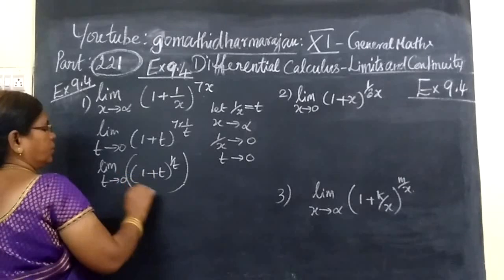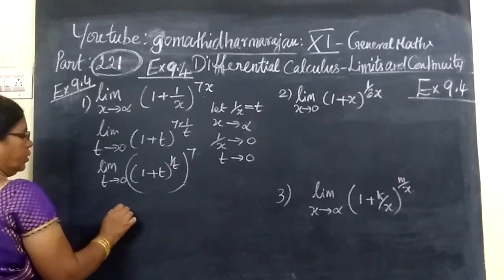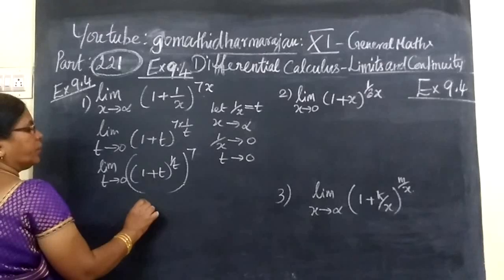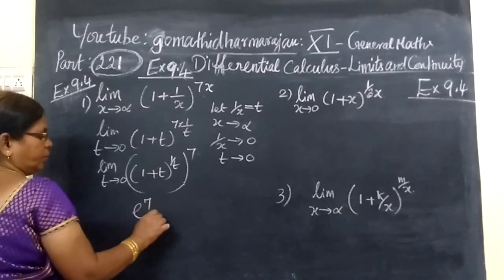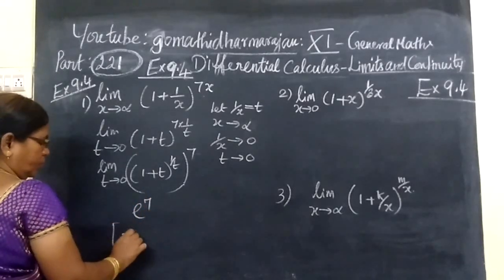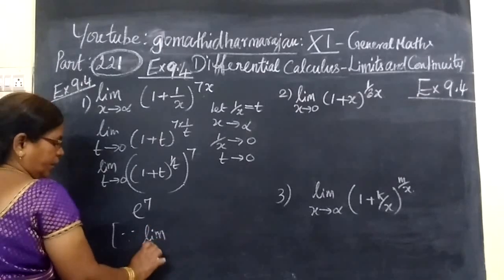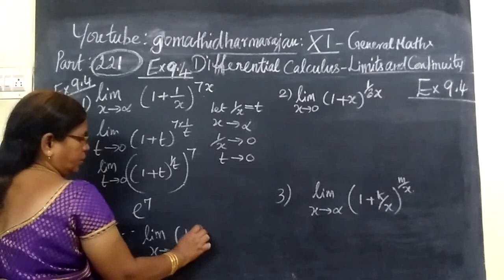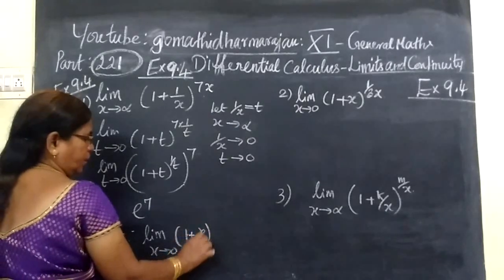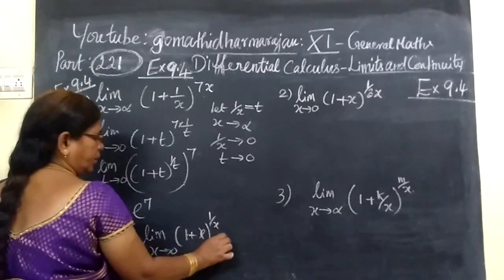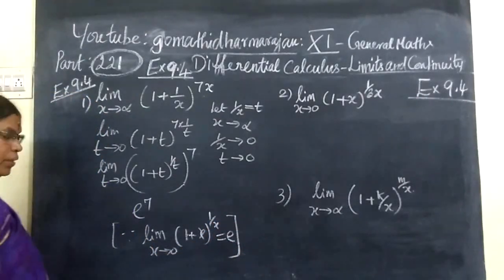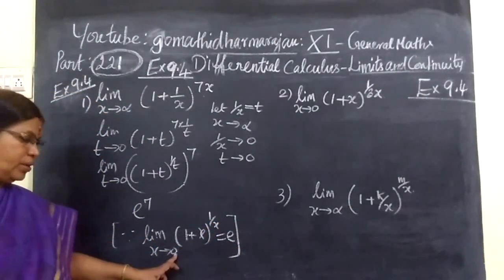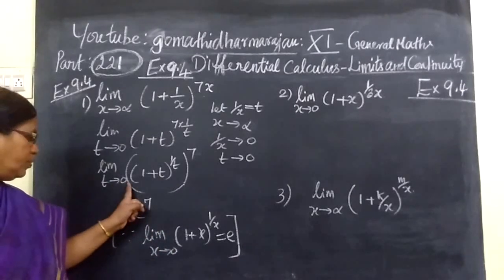Because we know limit x tends to 0, 1 plus x to the power 1 by x equals e. This is the formula in limit x tends to 0.